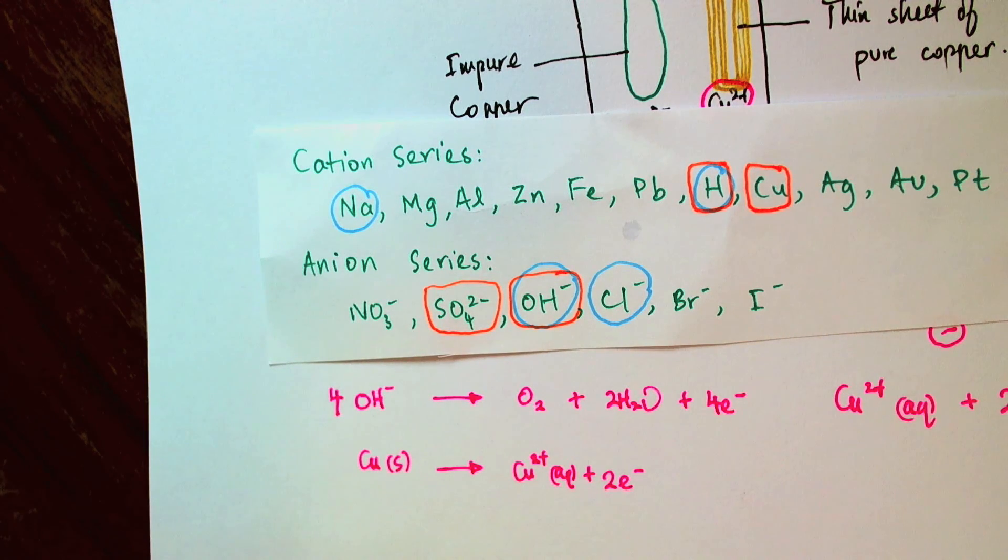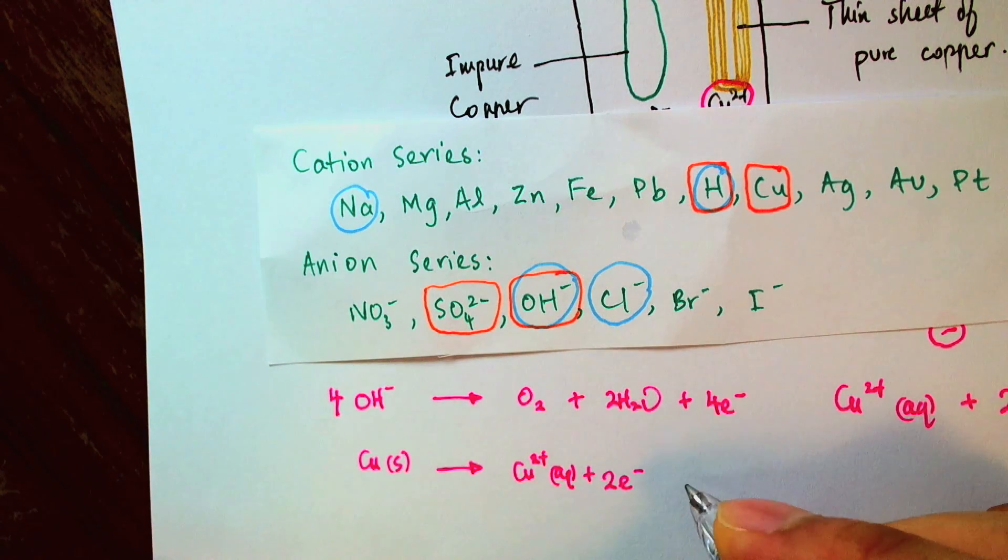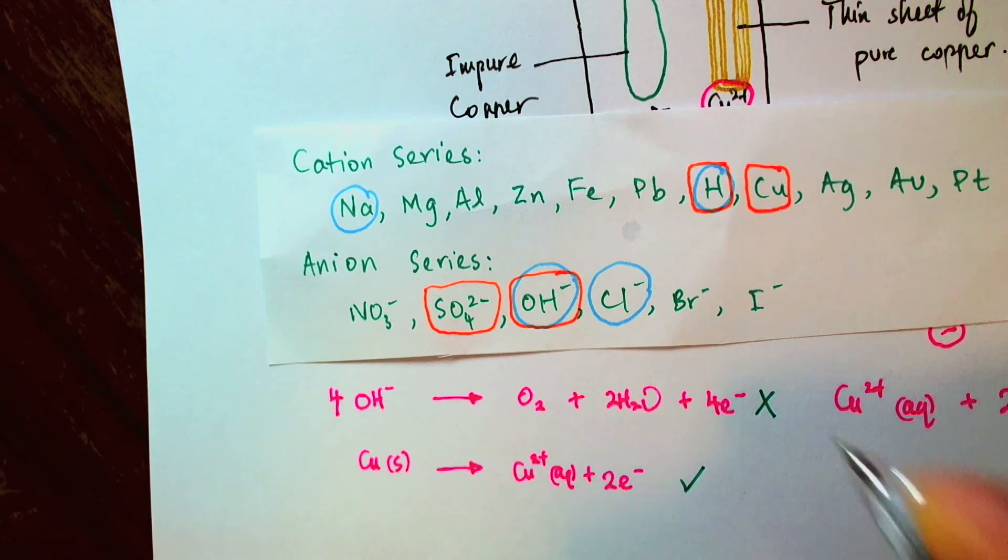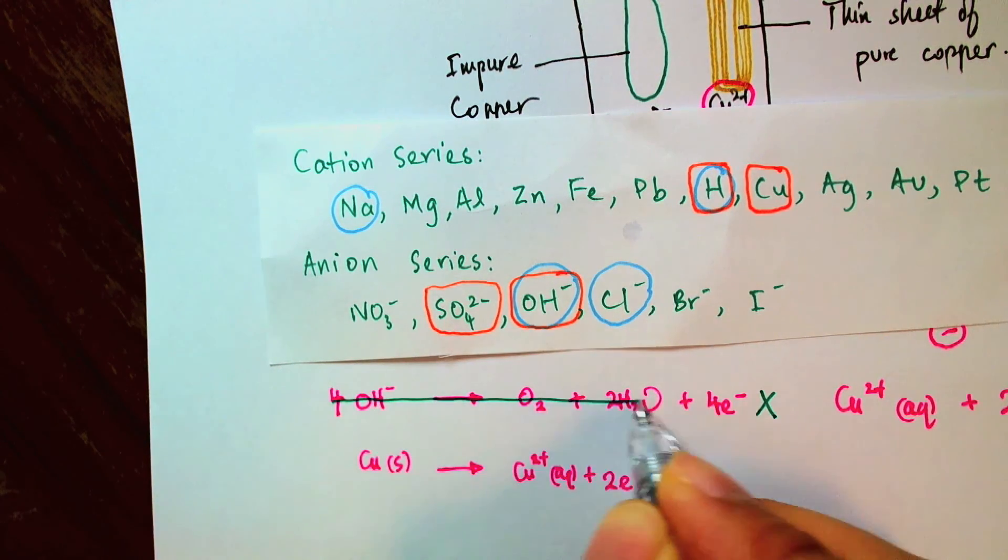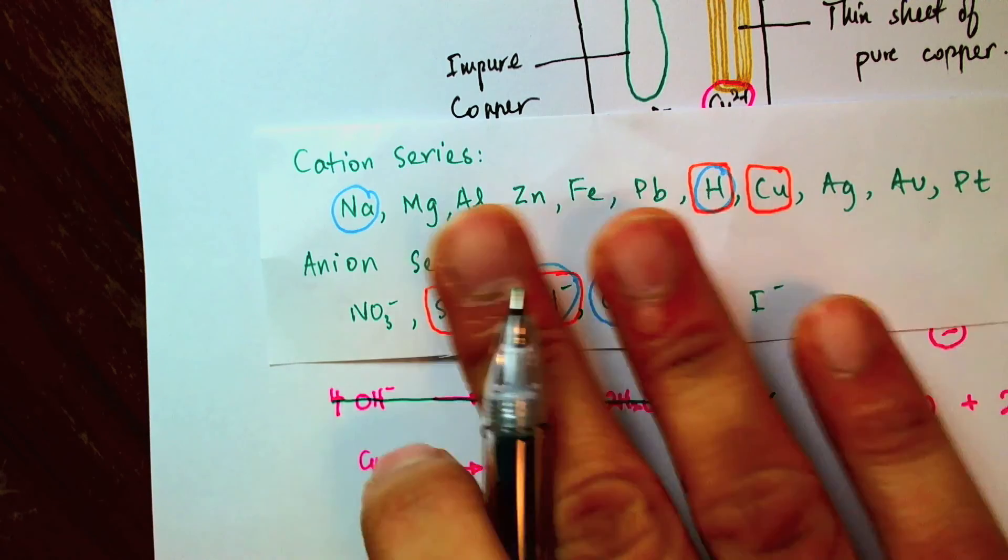we just need to accept that the second equation is the one that is more likely to occur than the first equation. So at the anode, what will happen is the copper will dissolve in the solution and give up its electrons. So this reaction is favored over this reaction. So I'll take this reaction away since it will not happen.